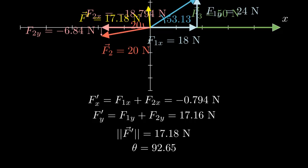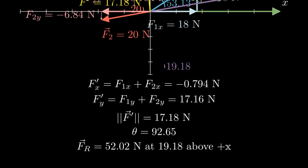Finally, we can add f3 to f prime to get our final resultant fr. Adding the components gives us a resultant force fr with magnitude 52.02 newtons at 19.18 degrees above the positive x-axis.